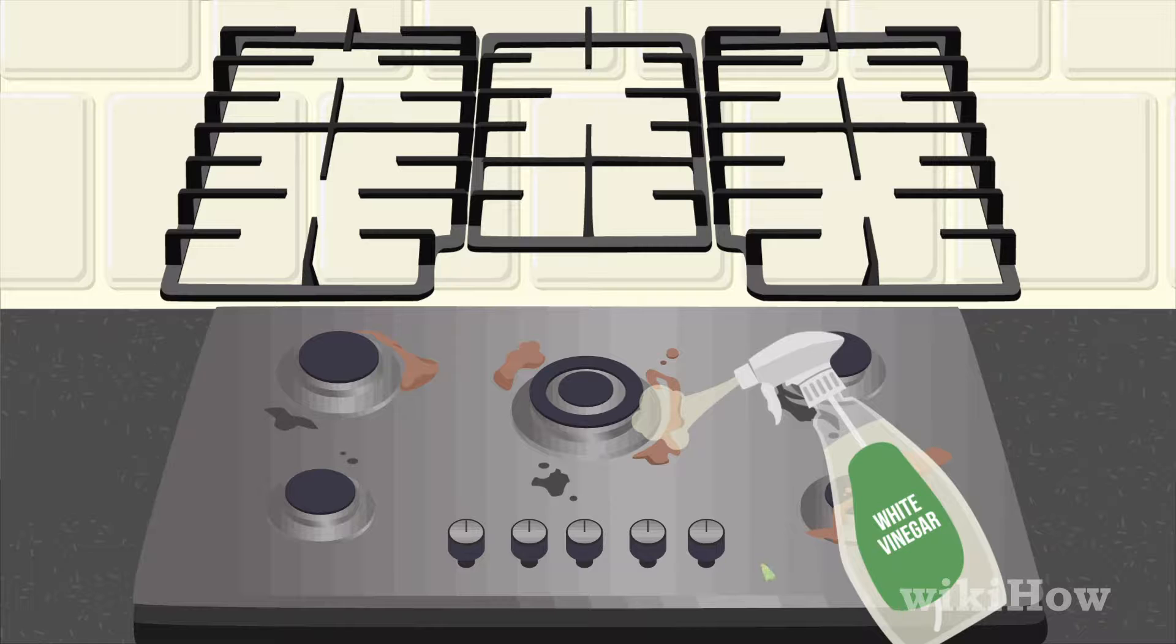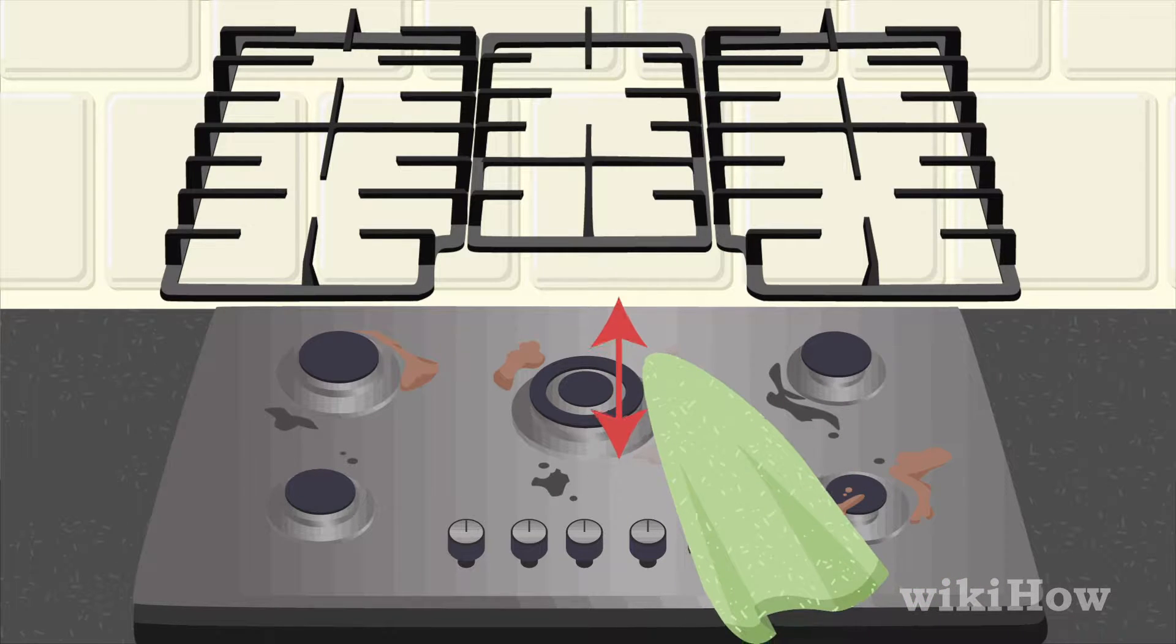Spray your stove with white vinegar and wipe it down with a soft cloth in the direction of the grain to remove surface dirt and grime.